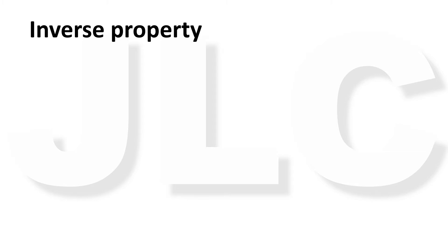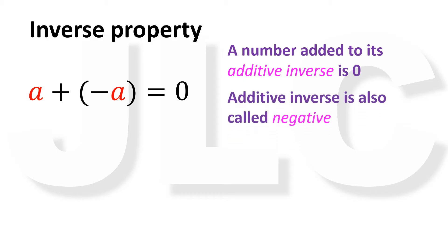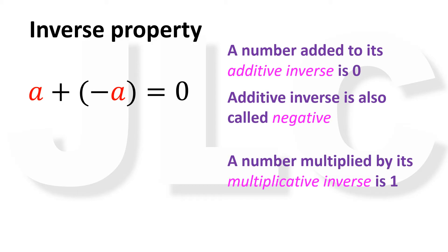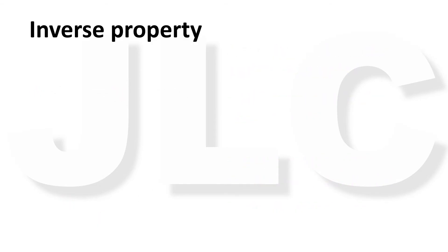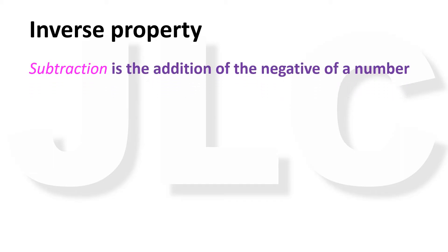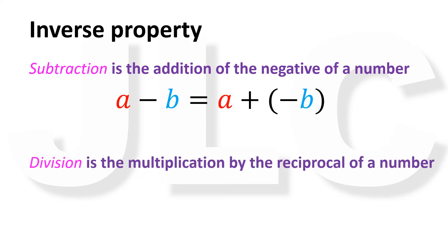The fifth property, which also applies to addition and multiplication, is the inverse property. In case of addition, every non-zero real number has an additive inverse, which is a number that satisfies A plus negative A equals 0. The additive inverse is basically the negative of the number. In case of multiplication, every non-zero real number has a multiplicative inverse, satisfying A times 1 over A equals 1. The multiplicative inverse is the reciprocal. From these, we define subtraction as A minus B equals A plus the negative of B, and division as A over B equals A times 1 over B.